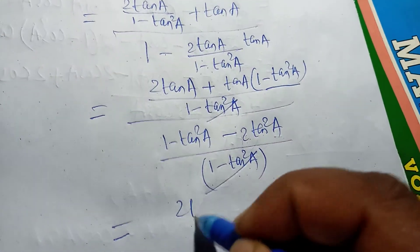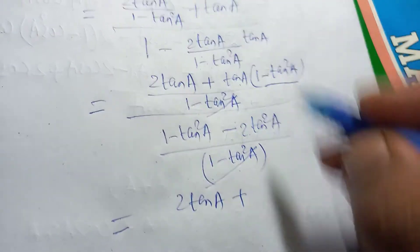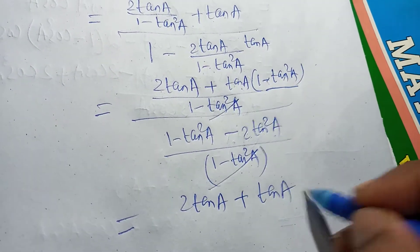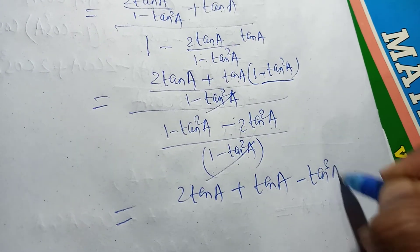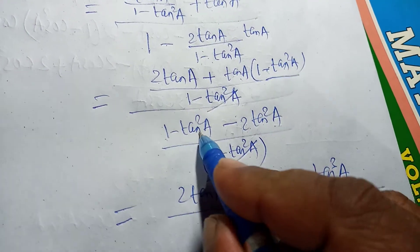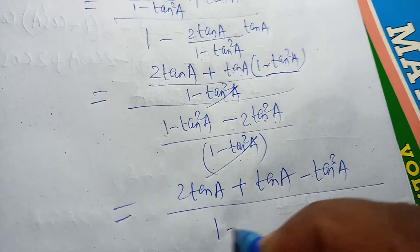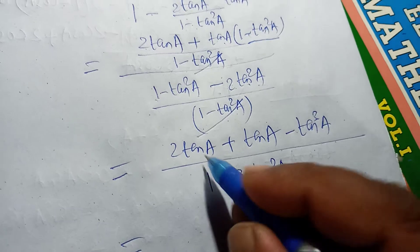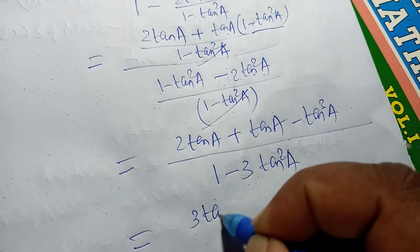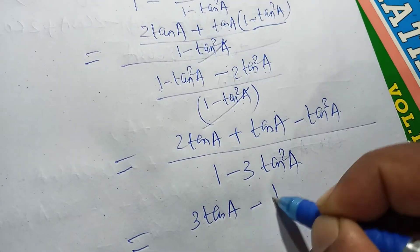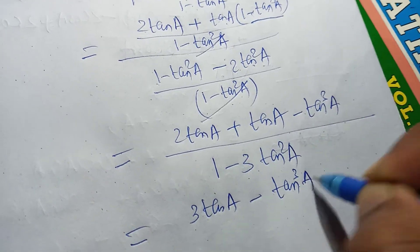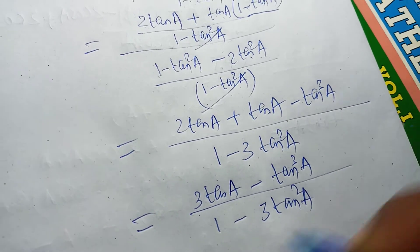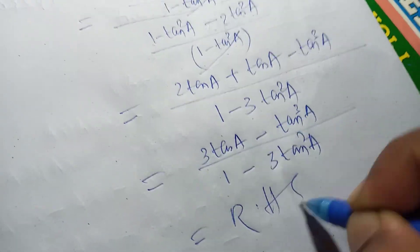So the numerator simplifies to 2 tan a plus tan a minus tan cube a, which is 3 tan a minus tan cube a. The denominator becomes 1 minus 3 tan square a. Therefore, tan 3a equals 3 tan a minus tan cube a, divided by 1 minus 3 tan square a, which equals the RHS. Hence proved.